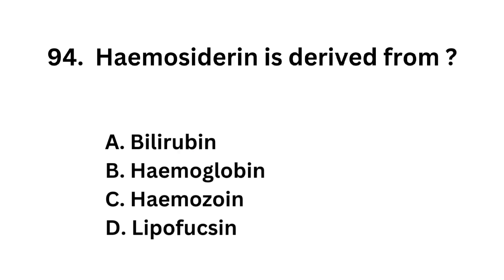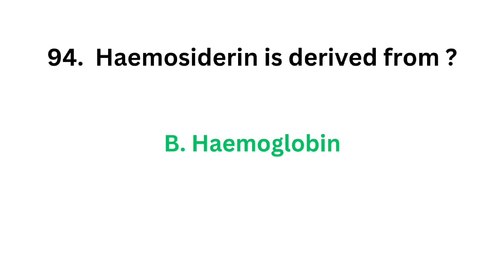Question number 94. Hemosiderin is derived from: option A. Bilirubin, option B. Hemoglobin, option C. Hemozoin, option D. Lipofuscin. The correct answer is option B, hemoglobin. Hemosiderin is derived from hemoglobin.